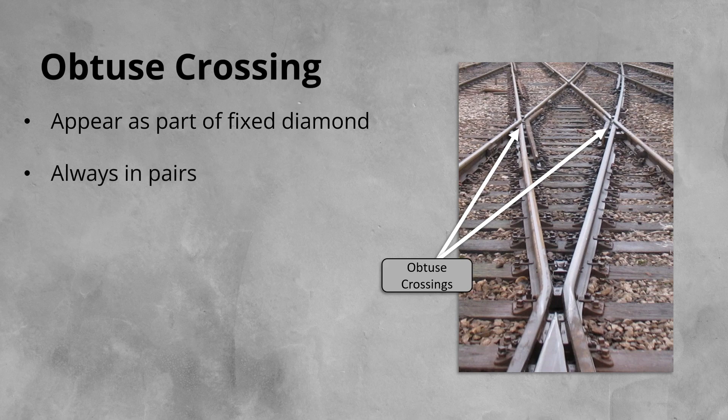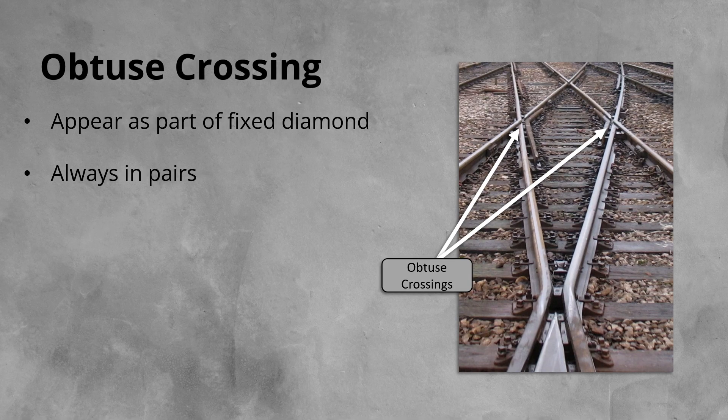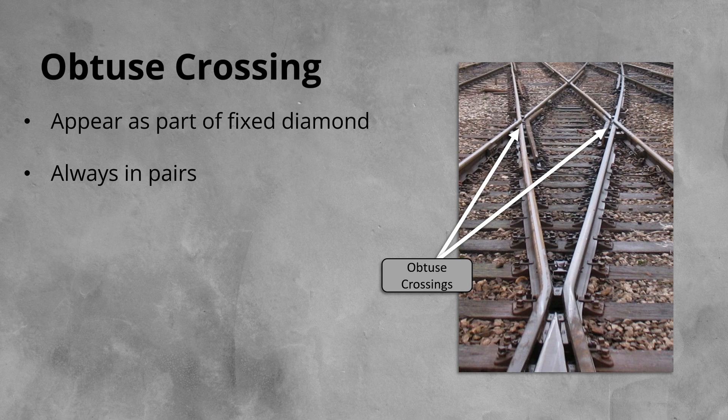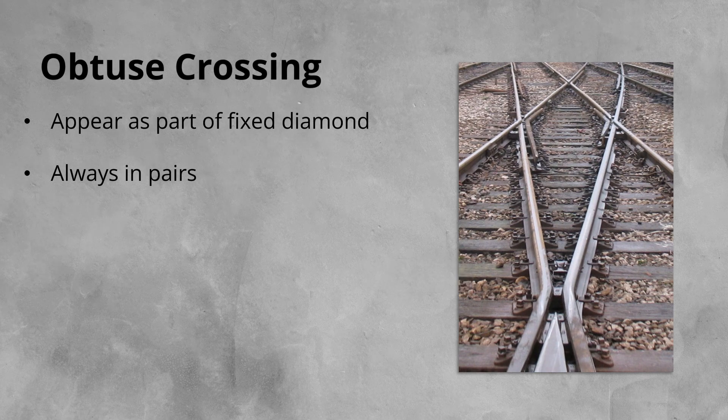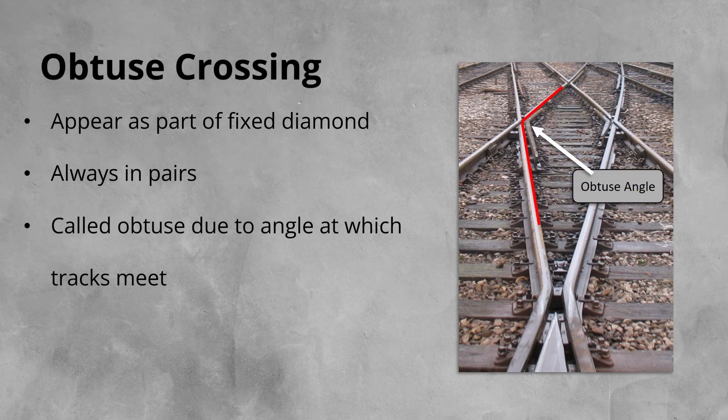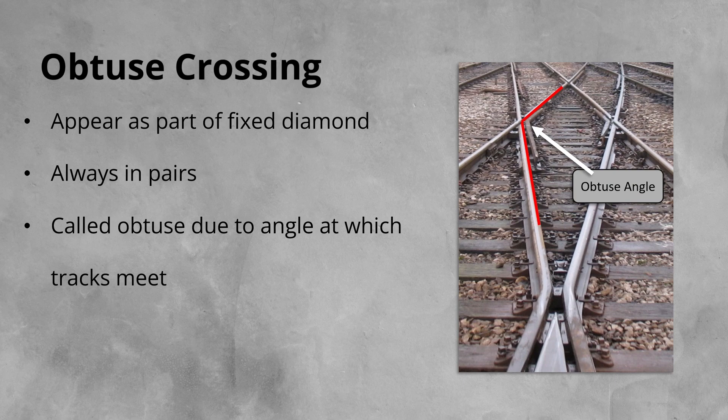Obtuse crossings always appear in pairs, sitting opposite each other in track. Similar to the acute crossing, the obtuse crossings get their name from the fact that the lines drawn, representing the rails a train would travel on, form an obtuse angle.